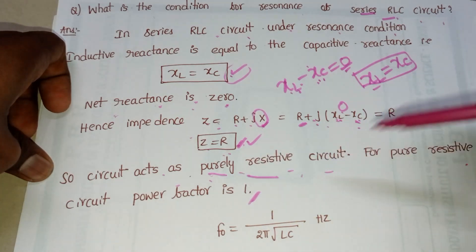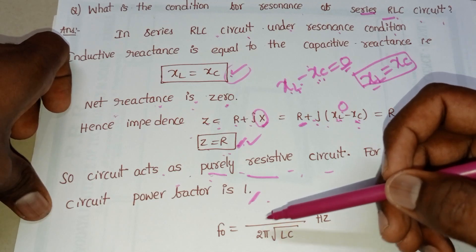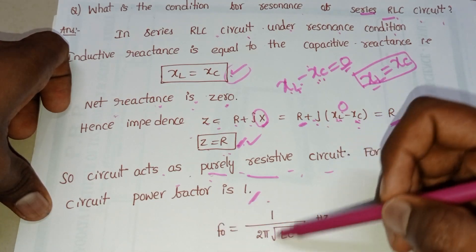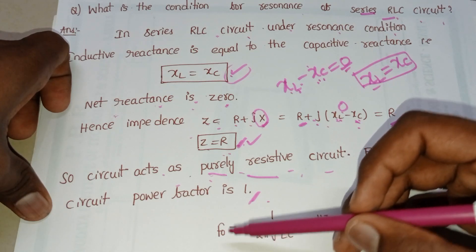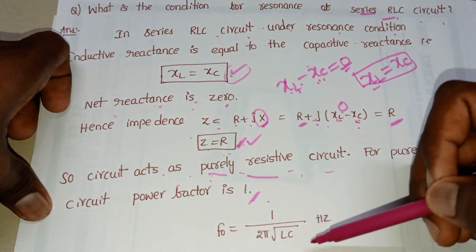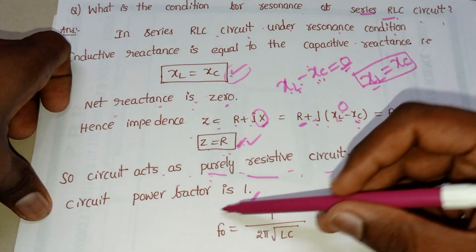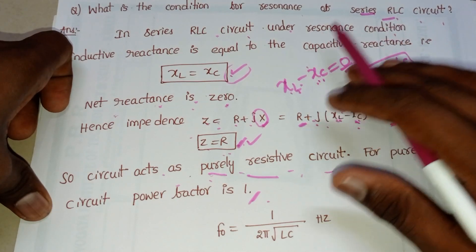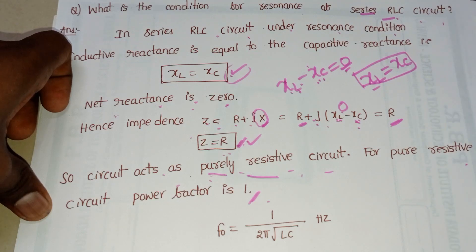Remember, for a purely resistive circuit, power factor is one. To find the resonant frequency for a series RLC circuit, the formula is F₀ equal to 1 divided by 2π times the square root of LC, where L and C are the inductance and capacitance values. This concludes the conditions for resonance of a series RLC circuit. Thank you for watching.